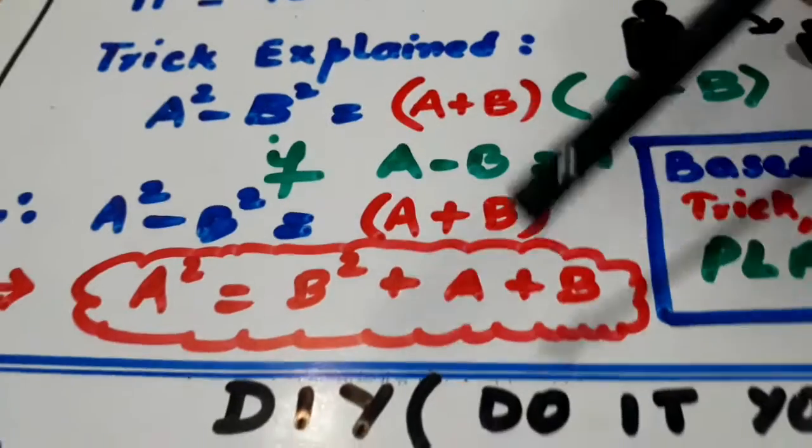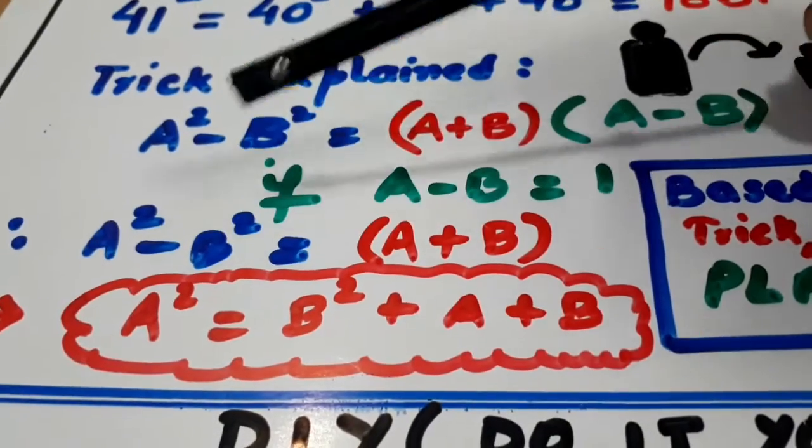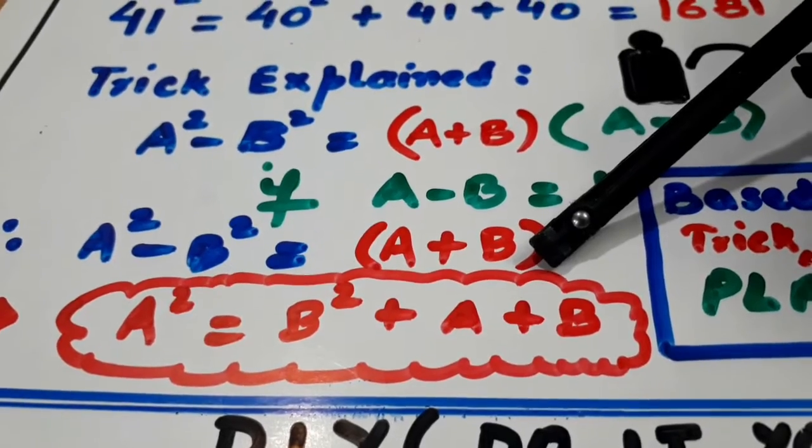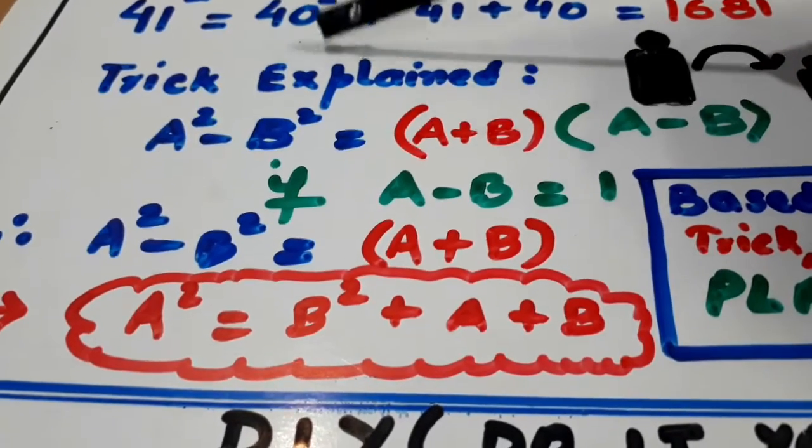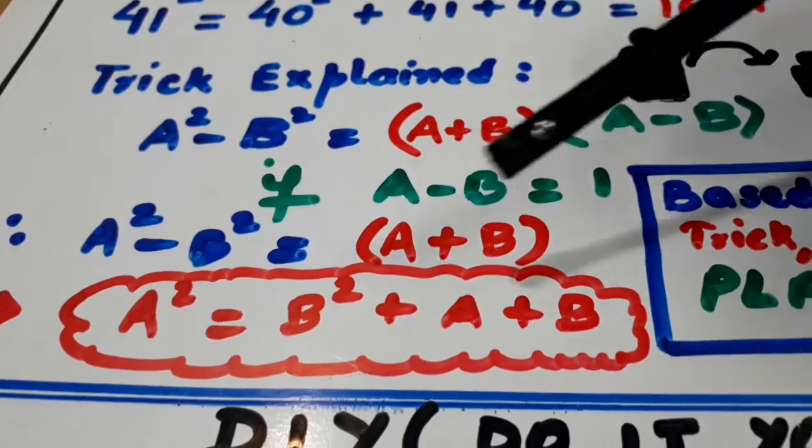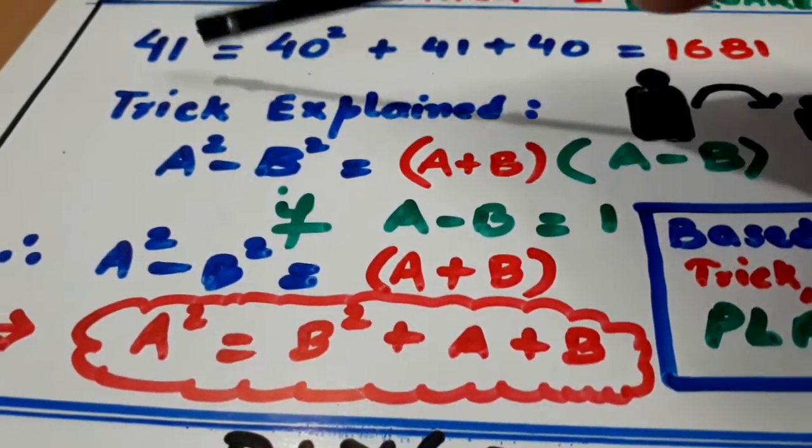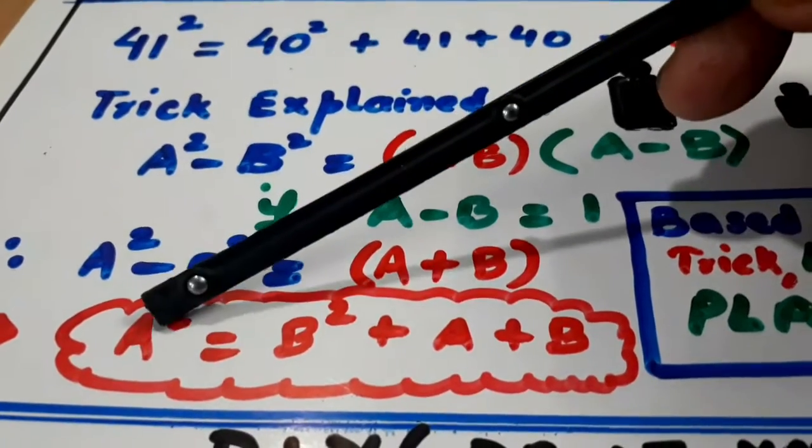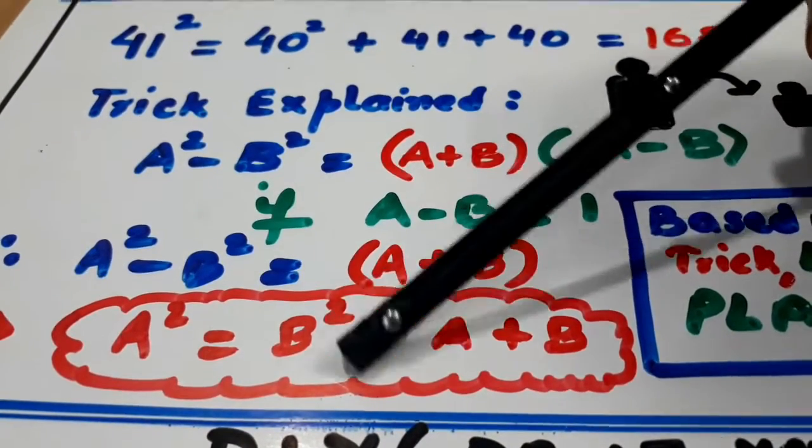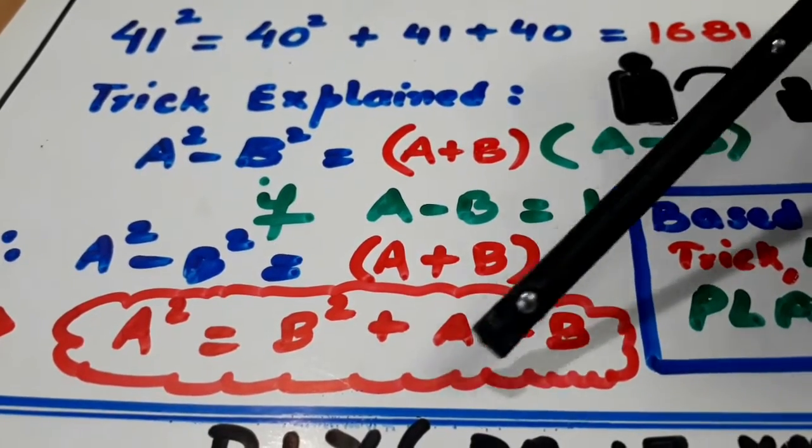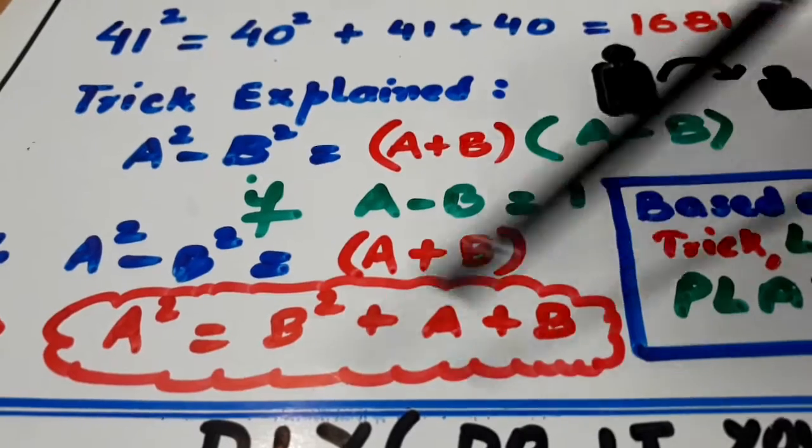Agar A minus B one ho jata hai, to A square minus B square will be equal to A plus B. A kitna hai, 41. B kitna hai, 40. Yeh add kar do. To B square mein A plus B add kar do. This is A square. 41 square. This is B square. 40 square. Ab doonho ko add kar do. 41 plus 40. So this is how you have to go about it.